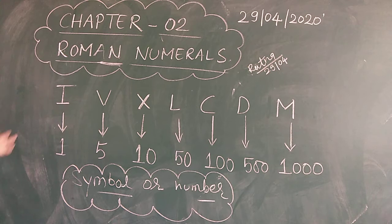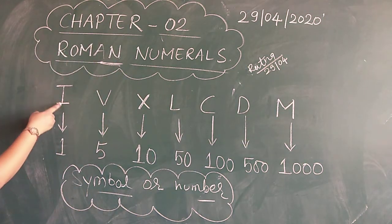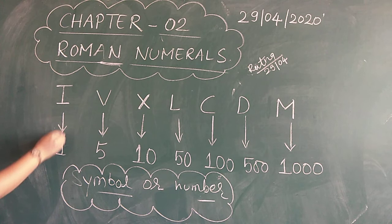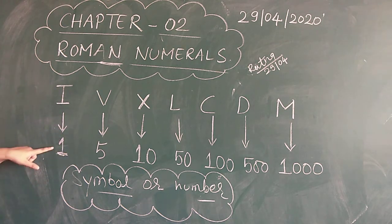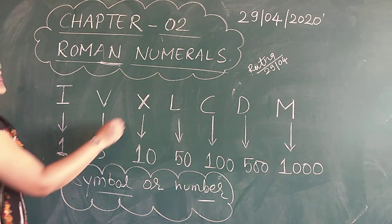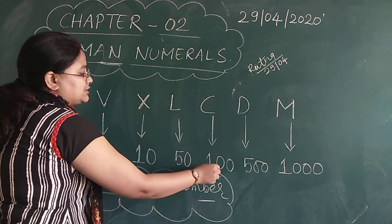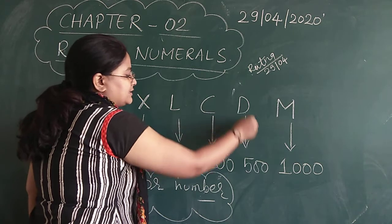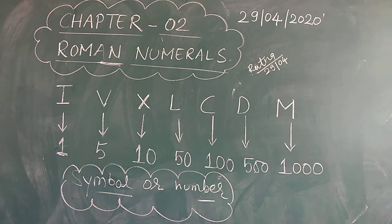In Roman numerals, we have basic symbols to understand them. These are the symbols we use: I stands for 1, V stands for 5, X stands for 10, L stands for 50, C stands for 100, D stands for 500, and M stands for 1000.